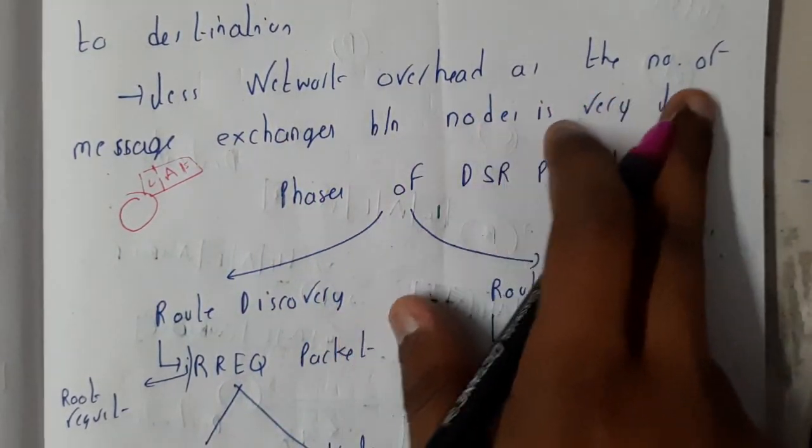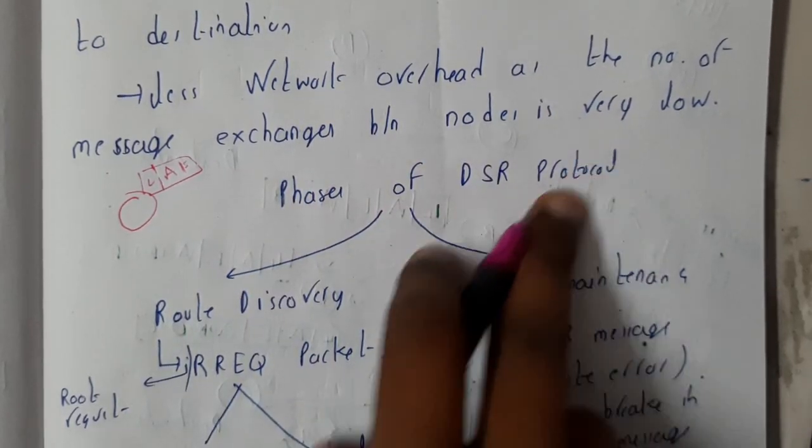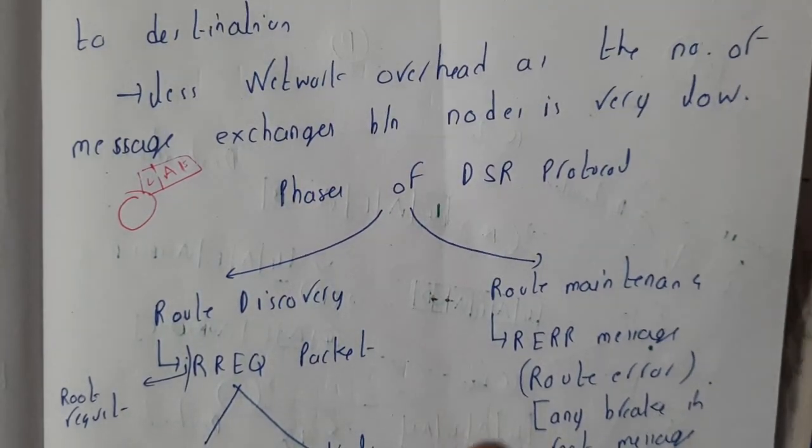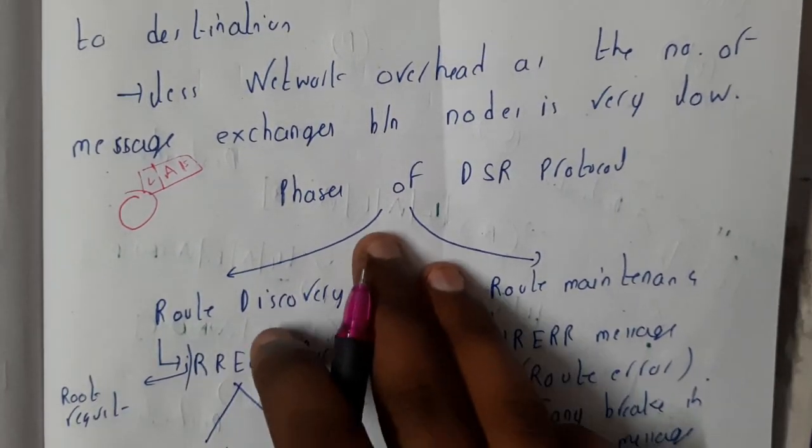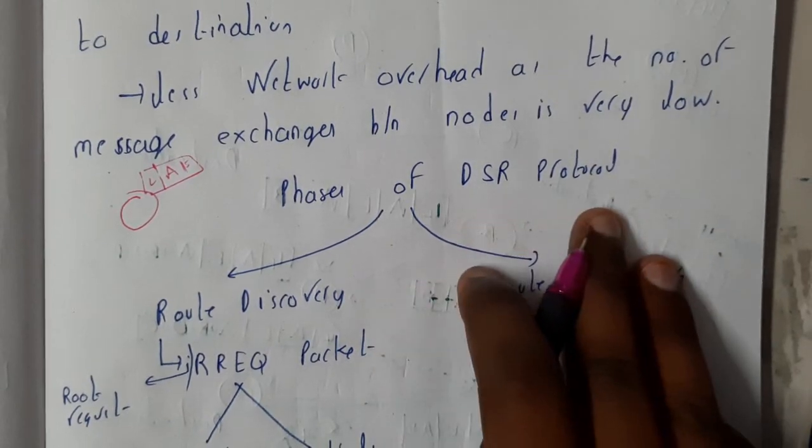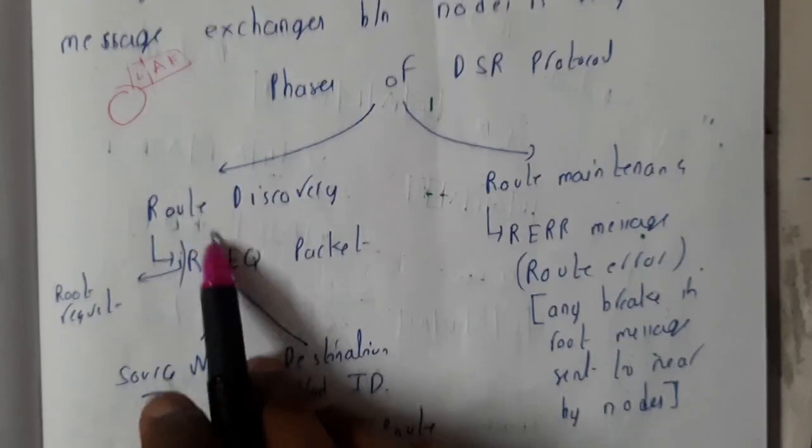Less network overhead as the number of message exchanges between the nodes is very low. When we compare with normal protocols, this is far better. We are having phases of DSR protocol. DSR is nothing but dynamic source routing.